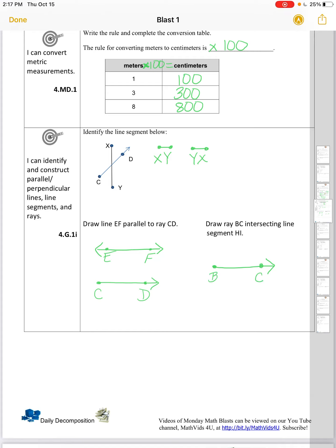And we want it to be intersecting line segment H, I. So intersecting means it's going to cross. And it's line segment, so we need endpoints at both ends. And H, I. And we can put these letters in either order because the ends are the same. There we have it. Ray B, C is intersecting line segment H, I.